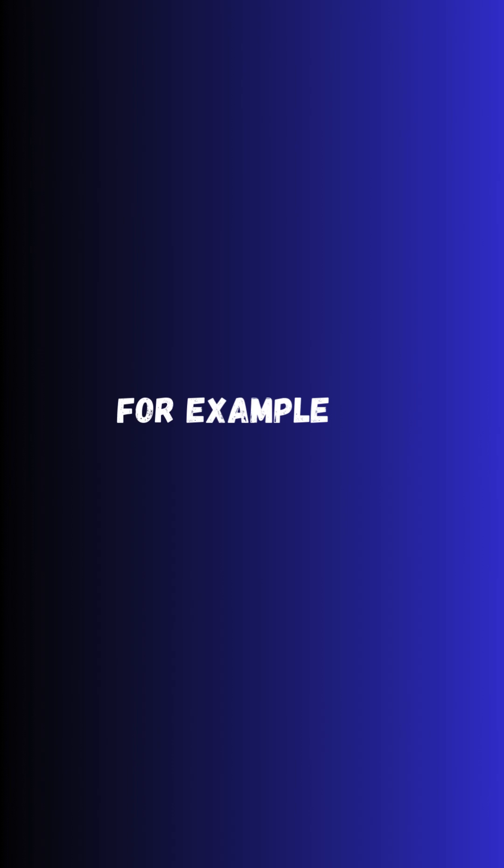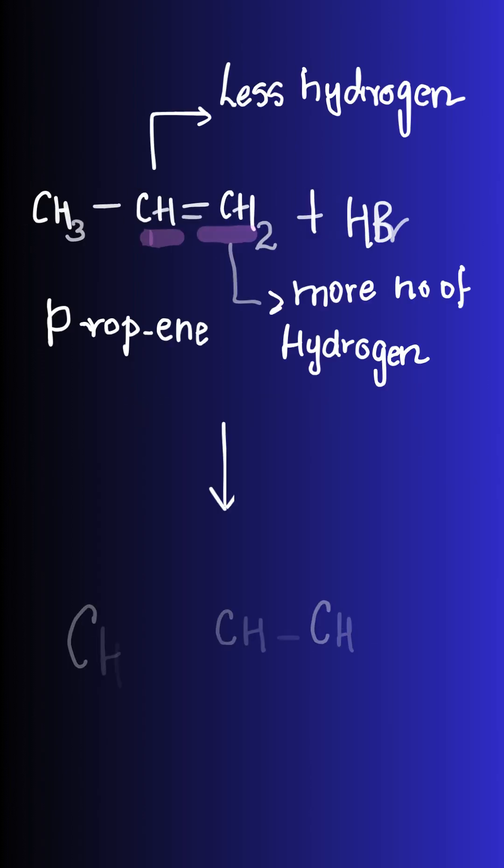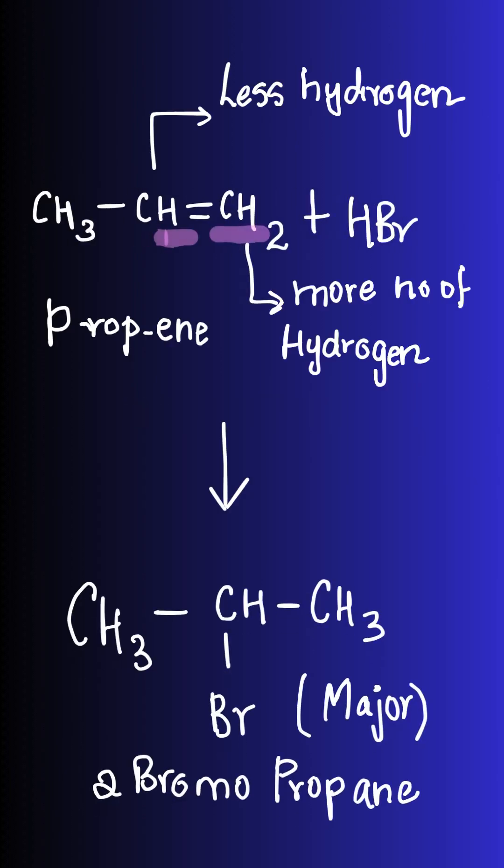To understand the rule better, let's take an example of propene plus HBr. In this addition, as you can see, the hydrogen from the HBr gets added to the CH2 of the propene on the right side of the double bond.